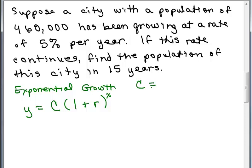So C is the initial population, that would be 460,000. R would be the rate, that's the percent you see, 5 percent per year. So we want to write that as 0.05. You want to write that as a decimal. And then X is the number of times. So we're talking about 15 years.